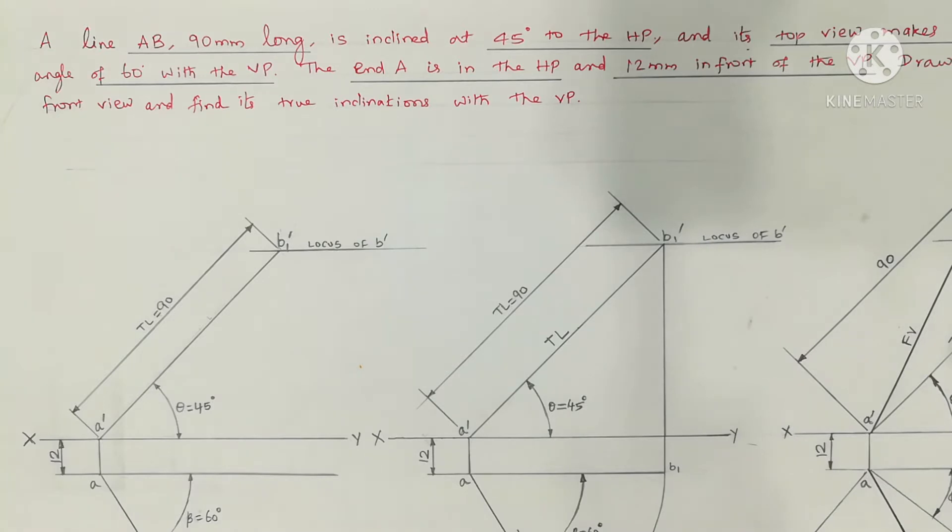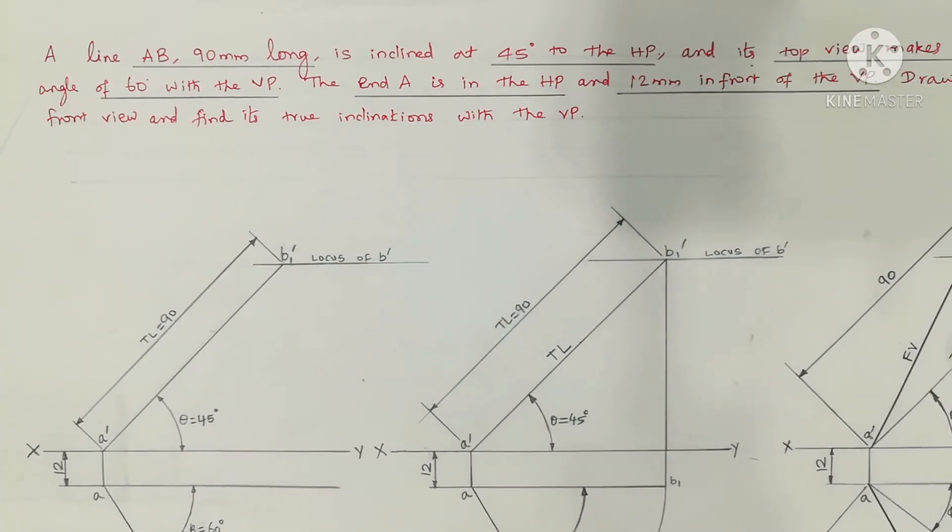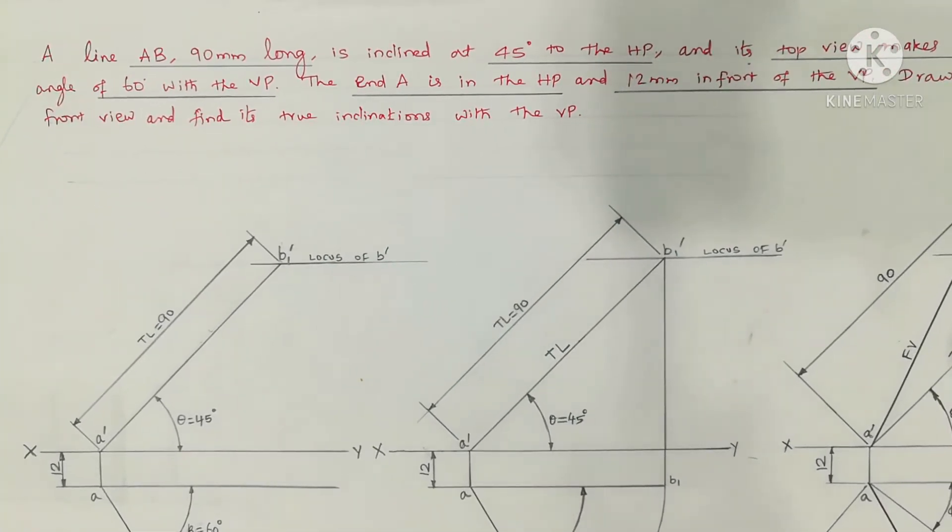A line AB 90mm long is inclined at 45 degrees to the HP, and its top view makes an angle of 60 degrees with the VP. The end A is in the HP and 12mm in front of the VP. Draw its front view and find its true inclinations with VP.